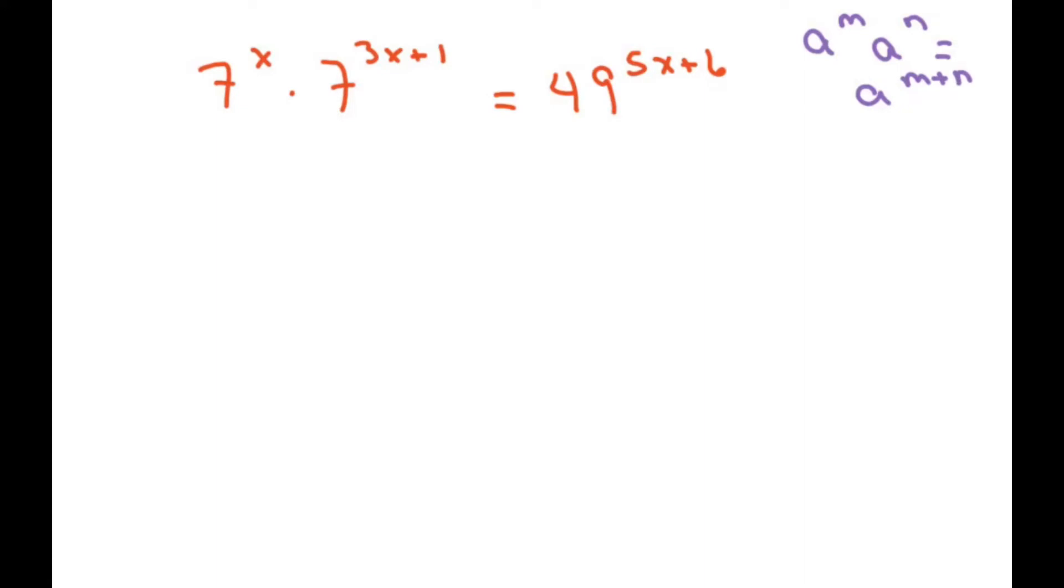So in this case, this is like your m and this part is like your n. So I'm going to write it as a single base. So I'm going to write 7 to the x plus 2x plus 1.